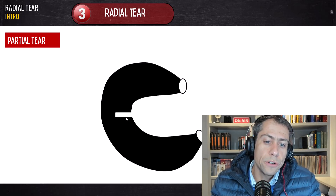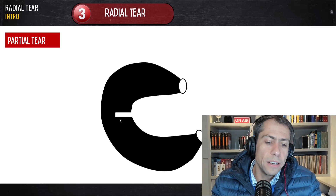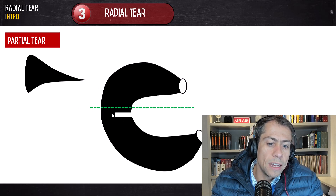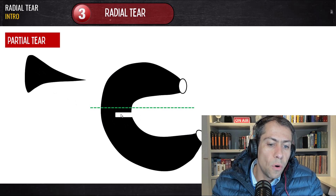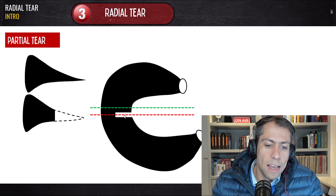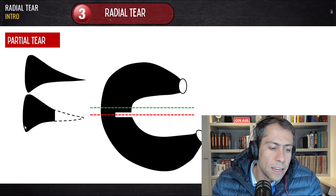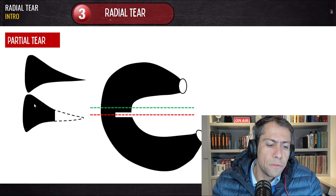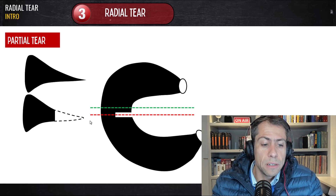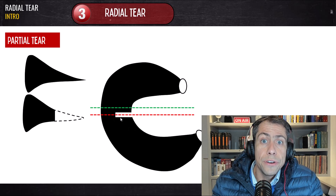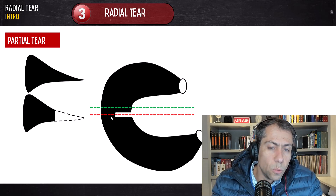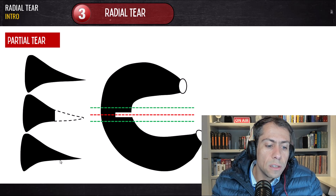So let's talk first about the partial radial tear. Here in this drawing, this is a partial radial tear in the meniscal body. In the plane that is parallel to the tear — the coronal plane — one slice before the tear we can see all the meniscus. At the level of the tear, we are going to see the peripheral portion of the meniscus, but not the inner portion of the meniscus, because that's the area of the radial tear.